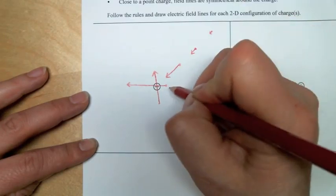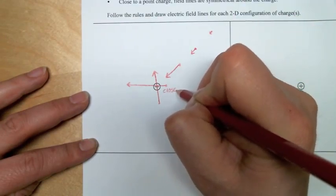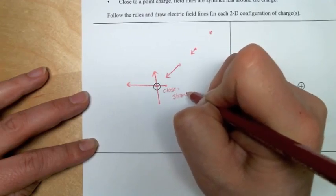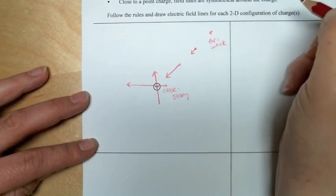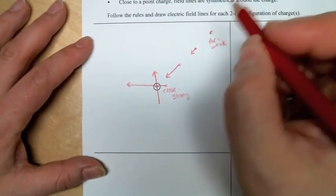We can do this for the entire region around our negative charge, showing that when we have a close distance we have a greater force or stronger force. When we have a far distance, we have a weaker force.